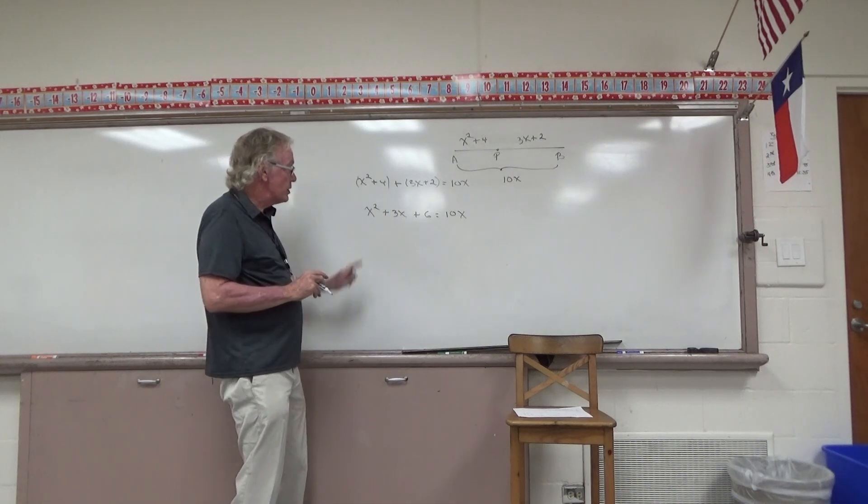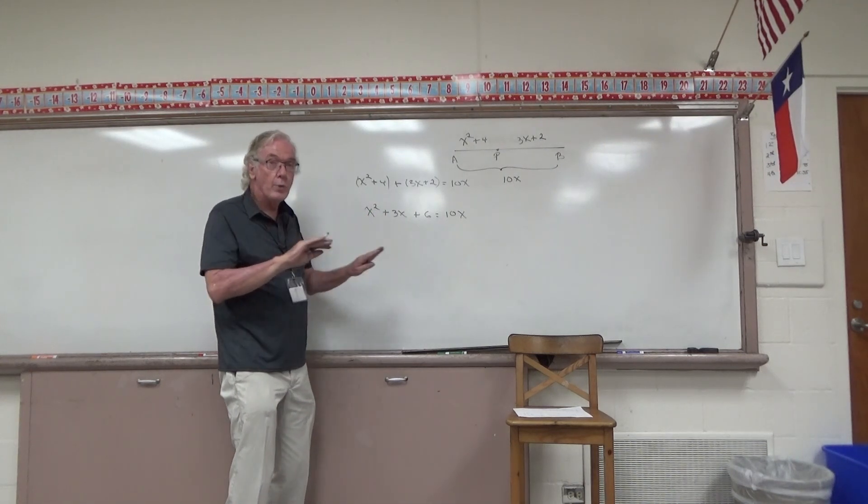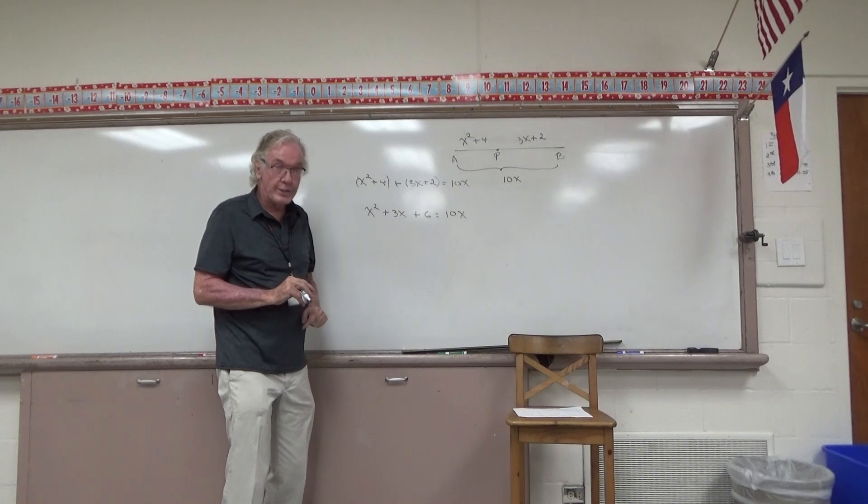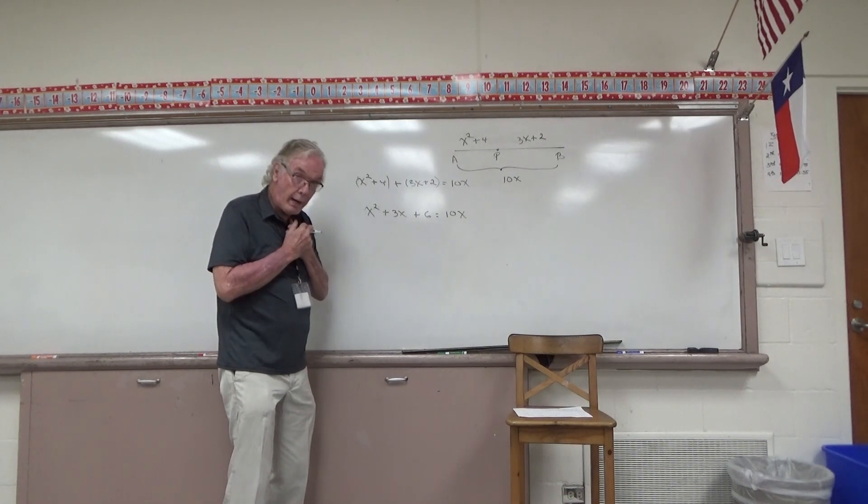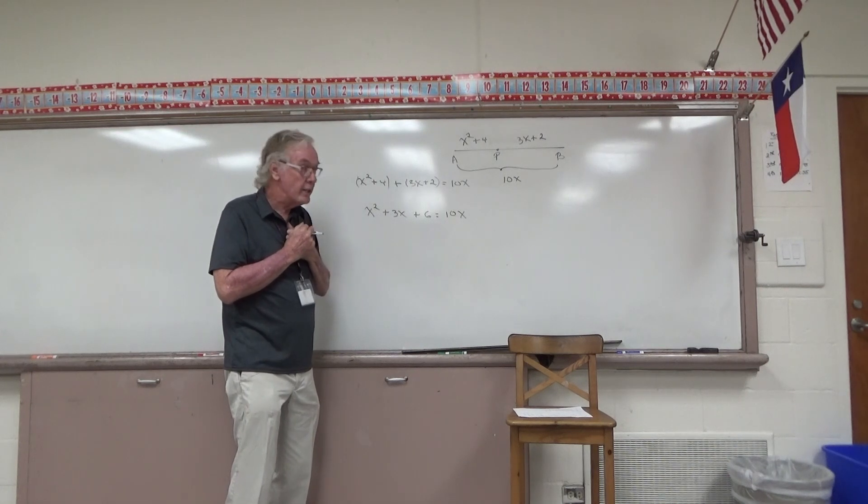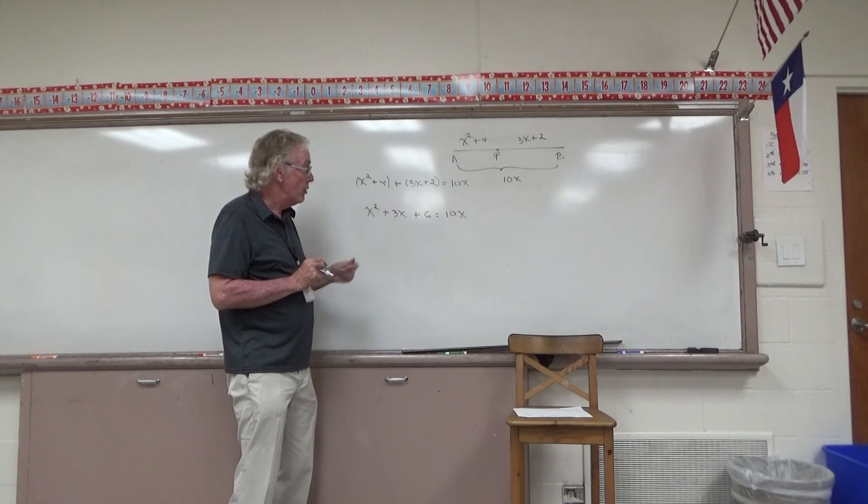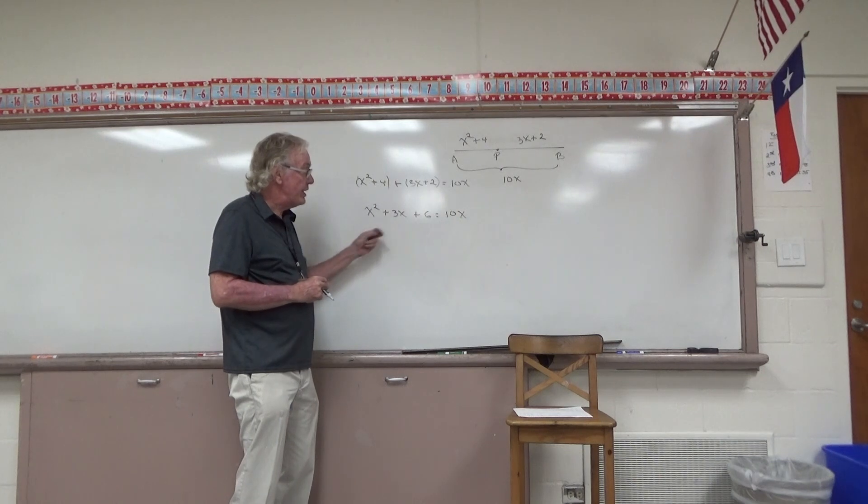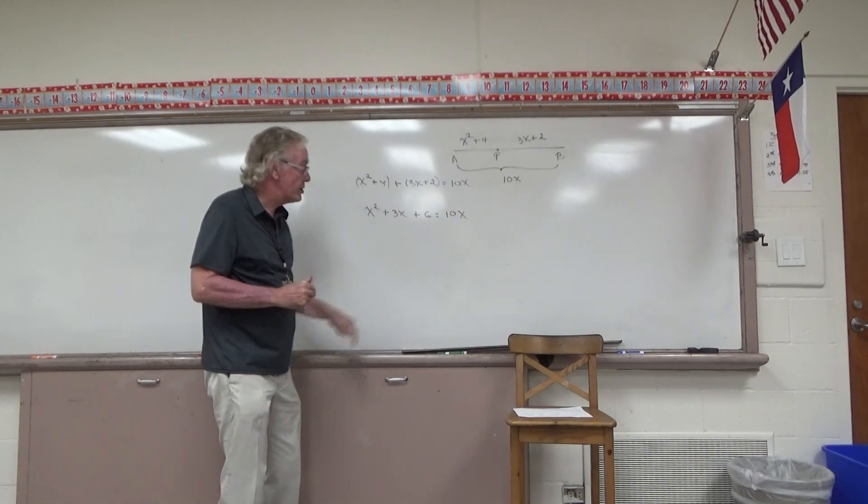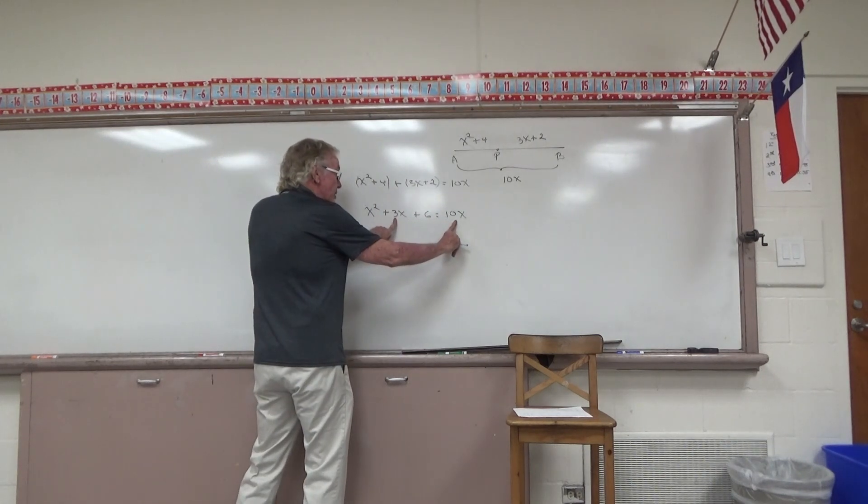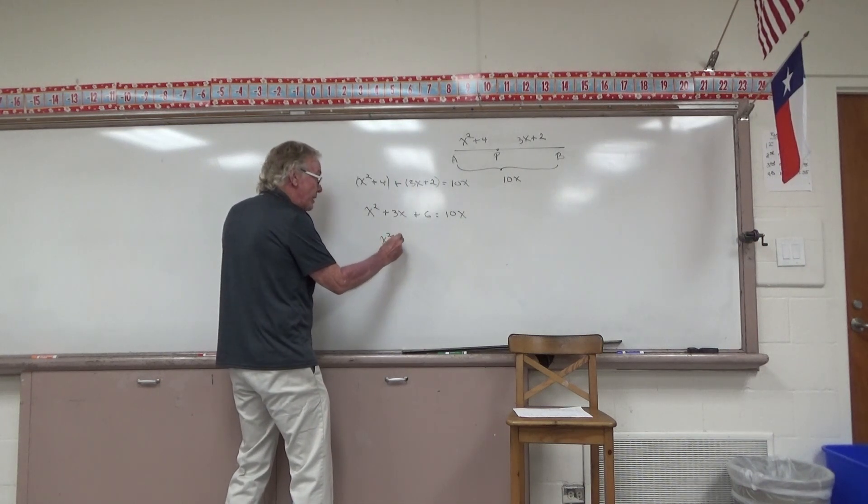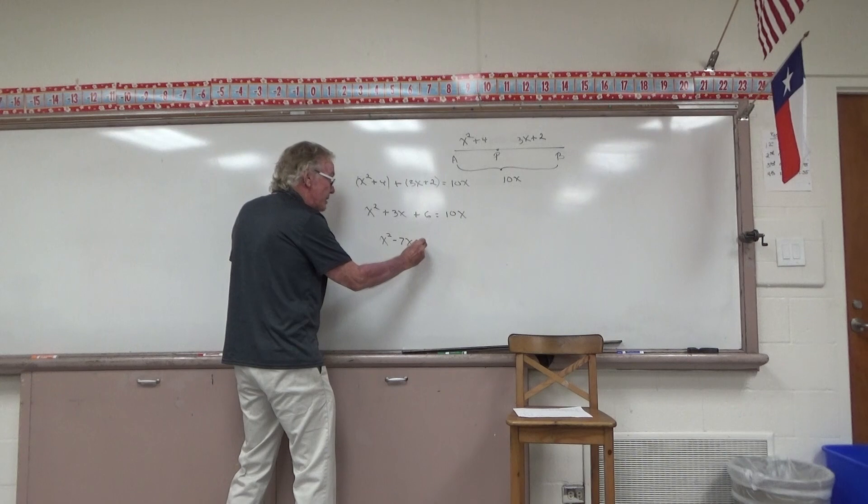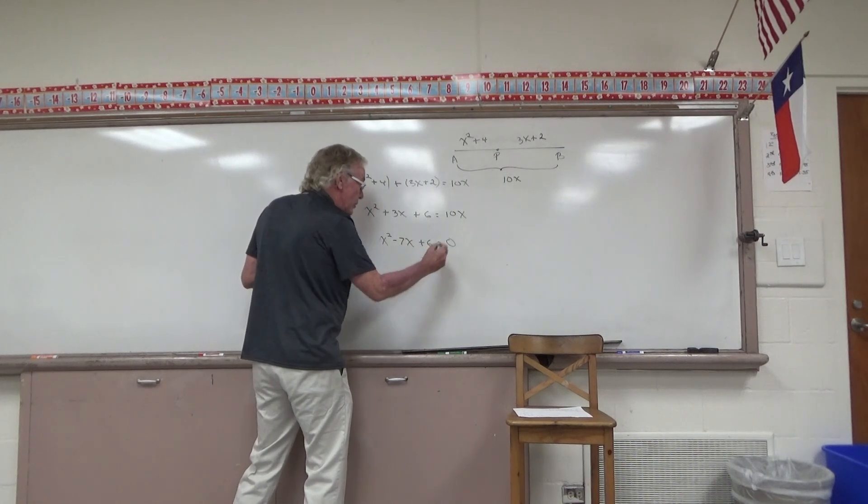What should we do now? Whenever we're solving a quadratic equation, you'll always set it equal to 0 first. No matter how you're going to do it, quadratic formula or factoring. We should set this equal to 0. I'm going to bring everything to the left-hand side. I'm going to subtract 10X from both sides. I'll subtract 10X from this 3X. When I do so, it becomes X squared minus 7X plus 6 is equal to 0.